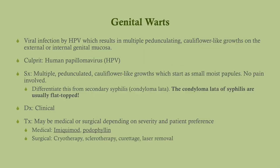Genital warts are very, very common, caused by HPV. They present as multiple pedunculating cauliflower-like growths. They start out as little papules, enlarge, and look like cauliflower. Unlike the condylomata lata of syphilis, which are usually flat-topped, genital warts have that cauliflower-like appearance. The diagnosis is clinical, and the treatment depends on severity and patient preference. Medical treatments include imiquimod and podophyllin. Some patients want them gone right away and can do cryotherapy or other techniques.